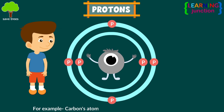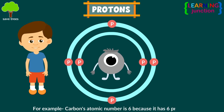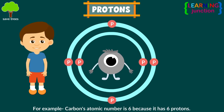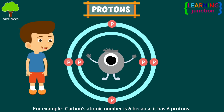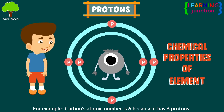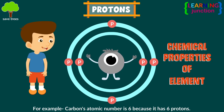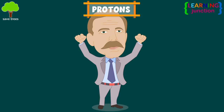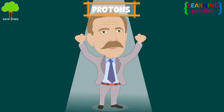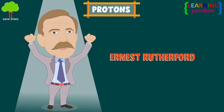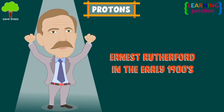For example, carbon's atomic number is six because it has six protons. The number of protons also determines the chemical properties of an element. Protons were discovered by a New Zealand-based physicist, Ernest Rutherford, in the early 1900s.